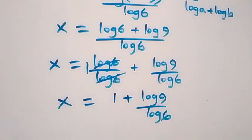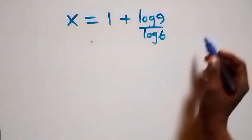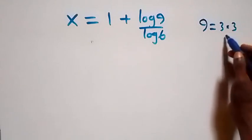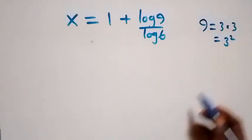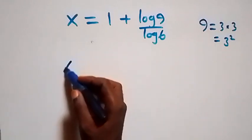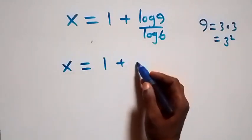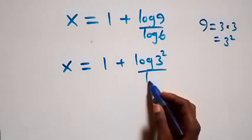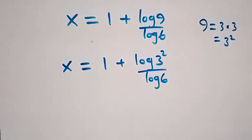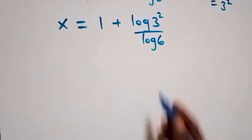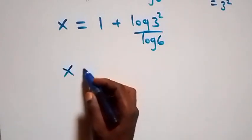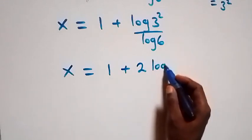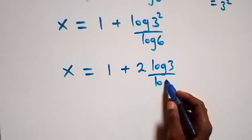We can reduce this further. Here, 9 is the same as 3 times 3, which is 3 squared. So we have x equals to 1 plus log 3 squared over log 6. Applying the power law of logarithms, the 2 comes down, giving x equals to 1 plus 2 log 3 over log 6.